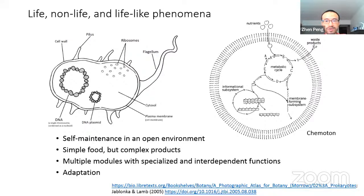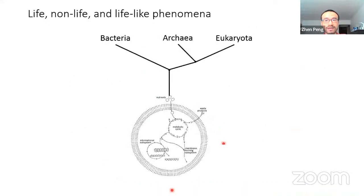To obtain a simplified description of a living cell and assist research on primitive life and the origin of life, people have proposed multiple abstract models. For example, the chemoton. A chemoton has three basic modules: a metabolic cycle to synthesize metabolites by consuming external nutrients; an informational system to store and process genetic information by polymers such as RNAs or DNAs; and a membrane-forming system to provide compartmentalization that defines cells and later intracellular organs.